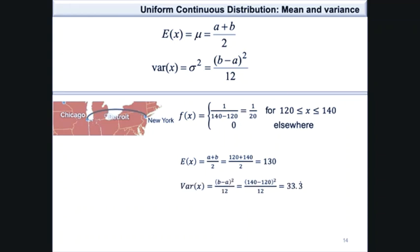The variance is calculated as 140 minus 120, squared, divided by 12, which gives 33.3 recurring. The standard deviation is the square root of 33.3, which gives an answer of 5.77 minutes. Therefore, the average distance between the mean and the data points in this population is 5.77 minutes.